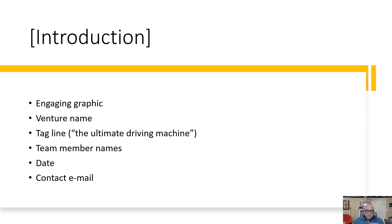We start with the introduction. The introduction should include an engaging graphic, the venture name — the Urban Entrepreneur Partner venture name — and a tagline you come up with that gives a brief, punchy promotion of the business. It should include your team member names, since you are the ones presenting. You'll talk about the Urban Entrepreneur Partner team later in the presentation. Include the date and contact information, such as a contact email, so someone can follow up with you.